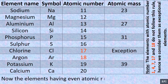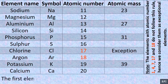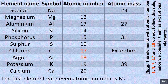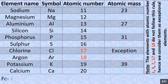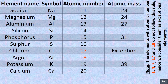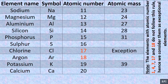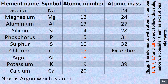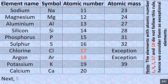Now the elements having even atomic number. The first element with even atomic number is magnesium: 2 multiplied by 12 equals 24. For silicon: 2 multiplied by 14 equals 28. For sulfur: 2 multiplied by 16 equals 32. Argon is an exceptional element to this rule. For calcium: 2 multiplied by 20 equals 40.